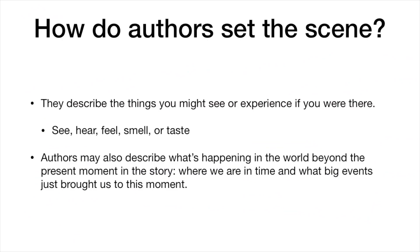So how do authors set the scene? Well, they describe things that you might see or experience if you, the reader, were there. So think of your senses — what do you see, what do you hear, what do you feel, smell, or even taste? Authors may also describe what's happening in the world beyond the present moment in the story — where we are in time and what big events just brought us to that moment. So they might give you some background to help fill in some ideas of the setting.